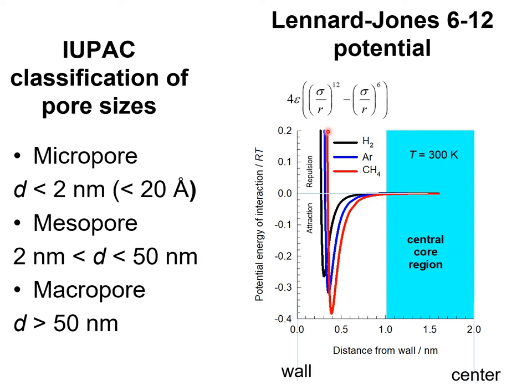R is the distance from the wall, and for each of these guest molecules, sigma is the size parameter and epsilon is the energy parameter. The sigma for hydrogen is smaller than the sigma value for methane.